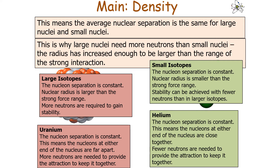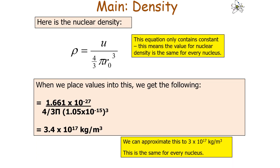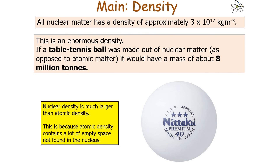Looking at the equation rho = u / ((4/3)πR₀³) and placing values in, we get that the nuclear density is 3.4 × 10¹⁷ kg/m³, so we can approximate that for every nucleus it has a nuclear density of approximately 3 × 10¹⁷ kg/m³. This is an enormous density.